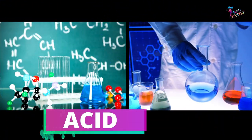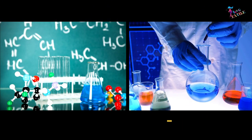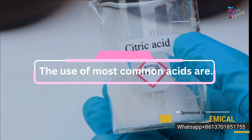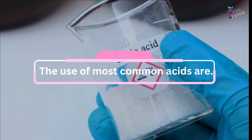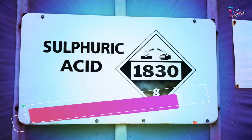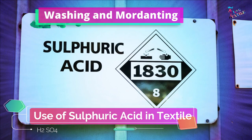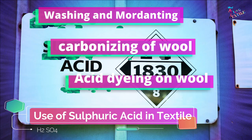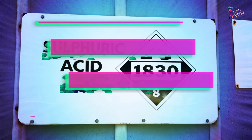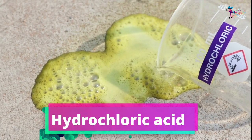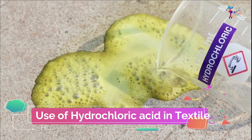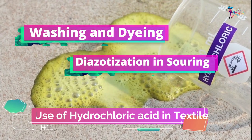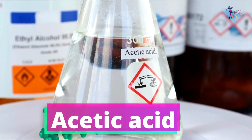Acid. In textile processing, acid is considered one of the most important chemicals. The most common acids used are: sulfuric acid, which is widely used in washing and mordanting, carbonizing of wool, and acid dyeing on wool; hydrochloric acid, used in washing and dyeing, in diazotization, and in scouring; and acetic acid, used for dyeing and neutralization.